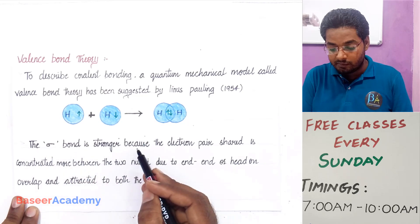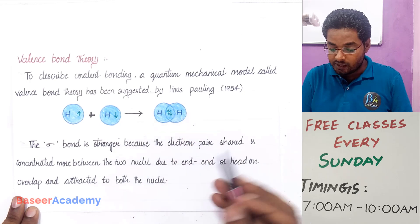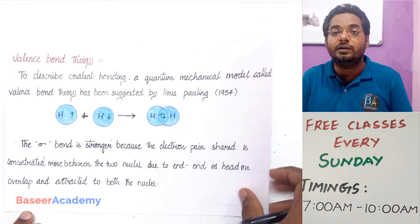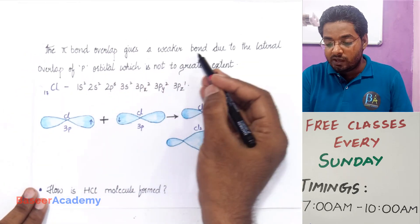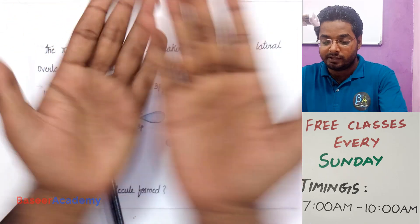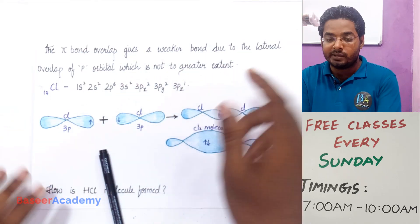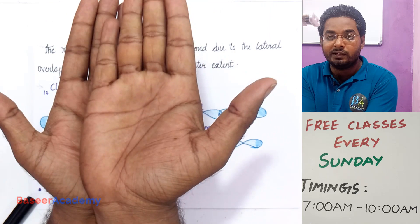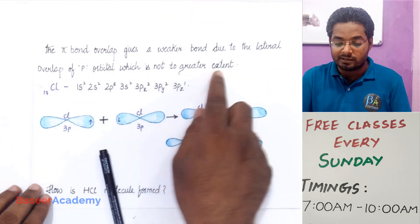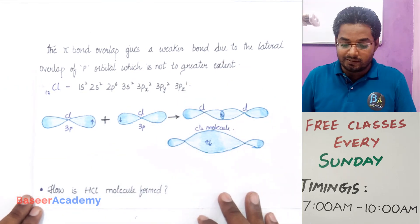The sigma bond is stronger because the electron pair shared is concentrated more between the two nuclei due to end-to-end or head-on overlap, and is attracted to both nuclei. The pi bond on the other hand gives a weaker bond due to lateral overlap — meaning they overlap sideways, not end to end. The extent of overlap is not much; the orbitals don't fall on one another to a greater extent, just a little. That is the reason a pi bond is a weaker bond.